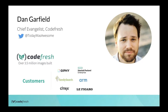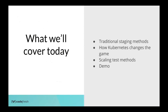I work for a company called Codefresh. This slide is a little old, but we've built over three and a half million images — probably over four, four and a half million now. We work with companies like Giphy, HP Enterprise, Arm, and LaFiguero. We launched about 18 months ago. Basically, what we're going to cover today is traditional staging methods and how Kubernetes changes that game, the elements that go into scaling those test methods, and a demo of how it works — something repeatable you can take home and do yourself.